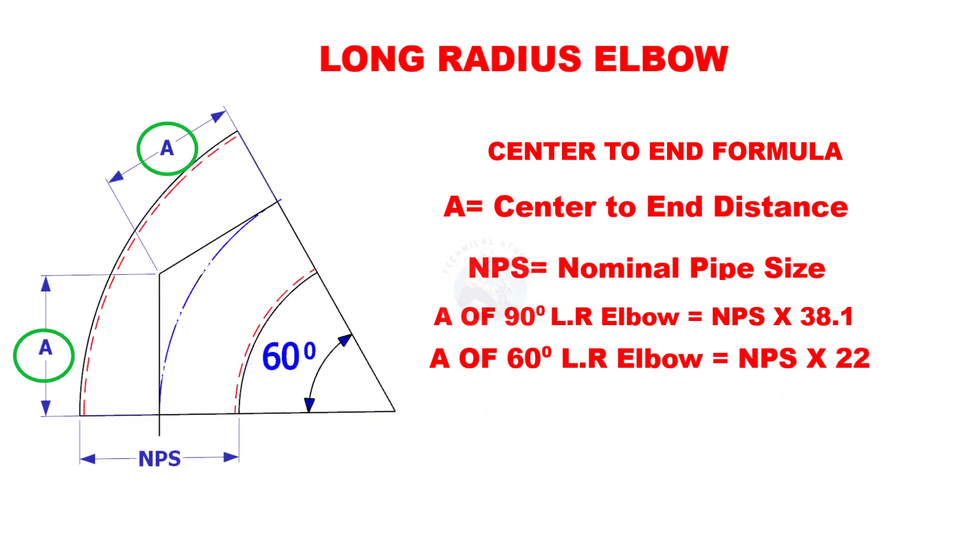A of 60 degree long radius elbow is nominal pipe size multiplied by 22.